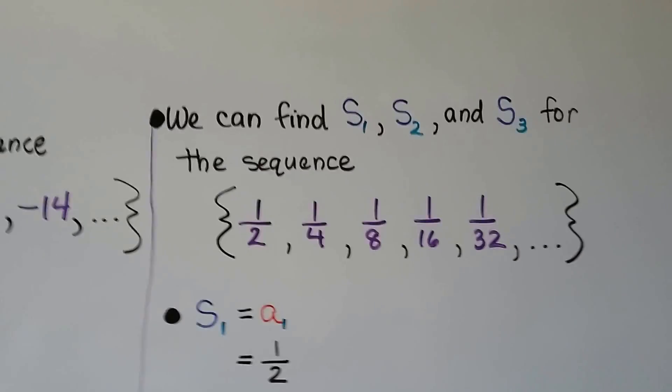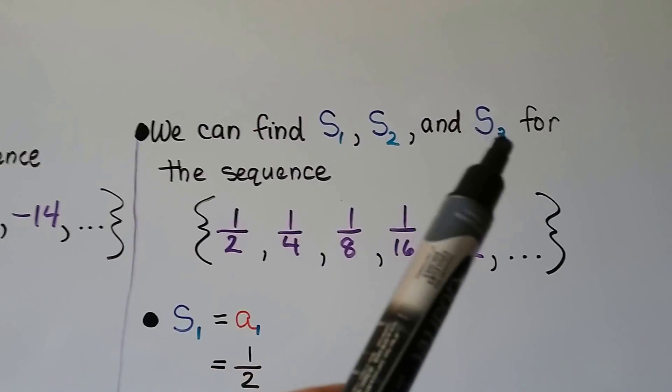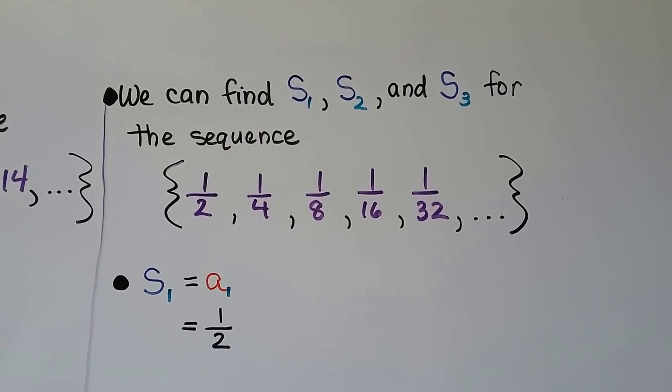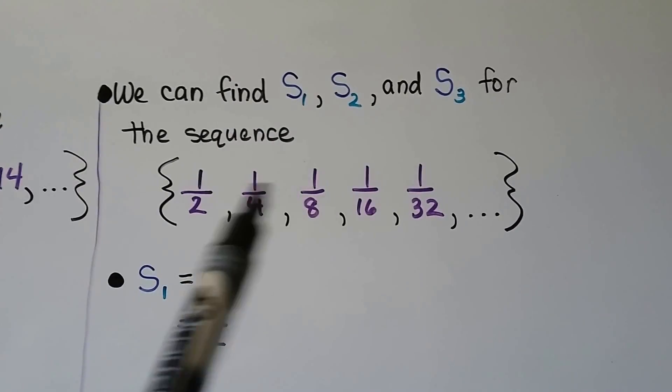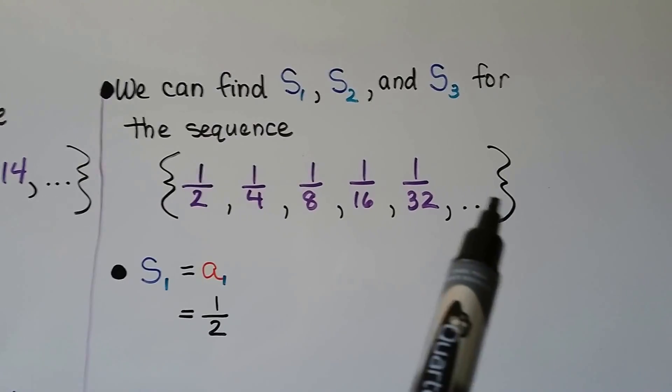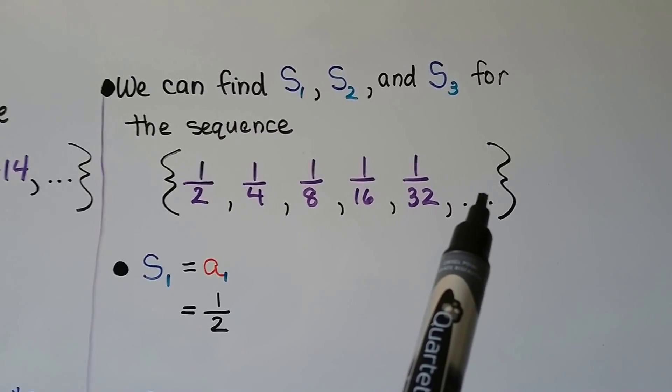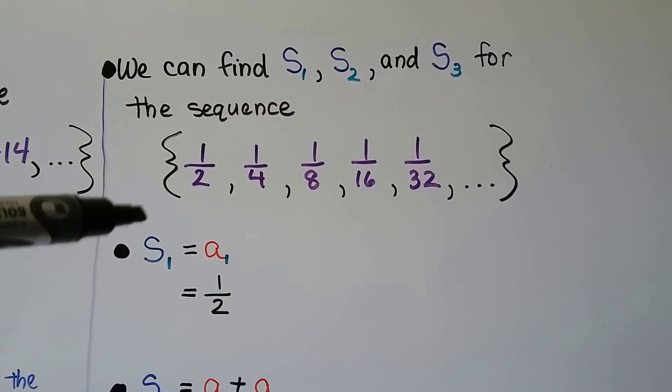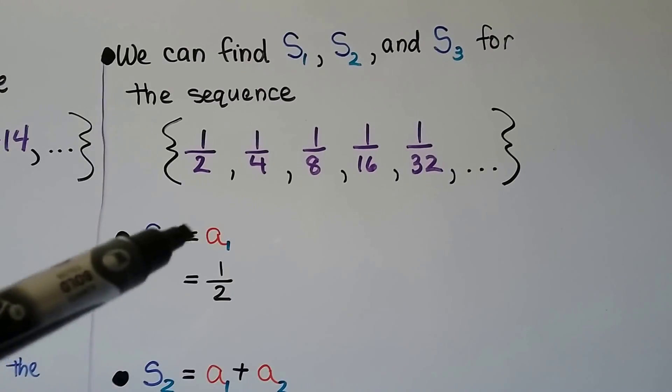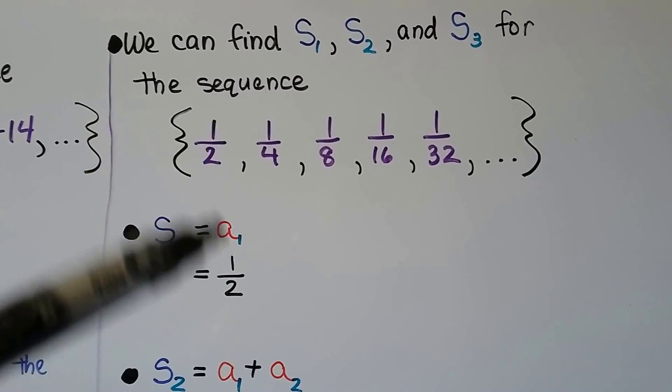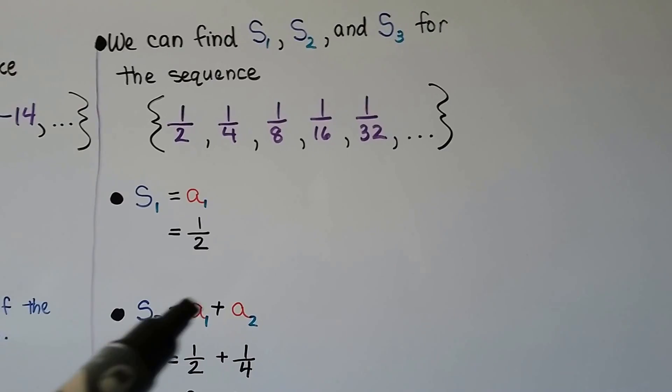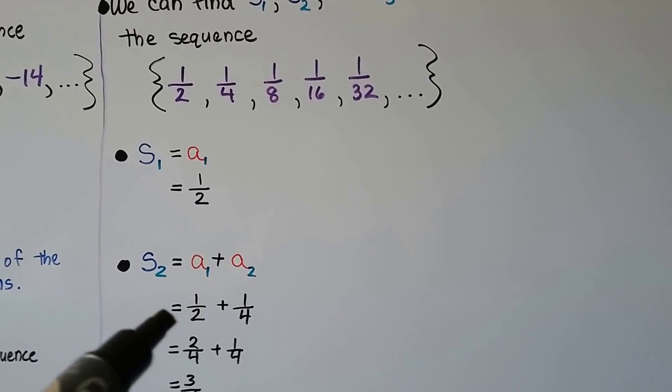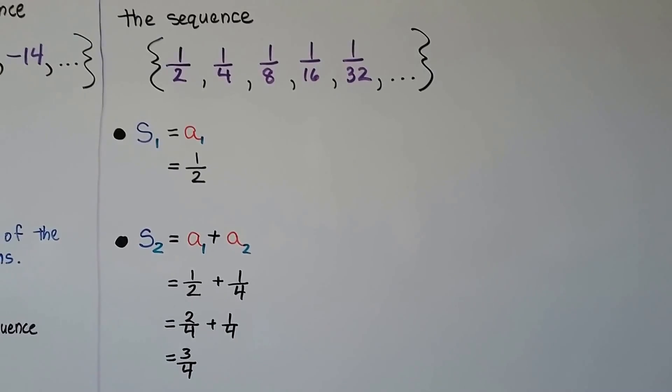We can find S_1, S_2, and S_3 for this sequence. We have fractions: 1/2, 1/4, 1/8, 1/16, 1/32. They're being divided by 2 each time. For S_1, we have a_1 = 1/2. For S_2, we want the sum of the first two. So we have 1/4 and 1/2 added together. With common denominators, we get 2/4 + 1/4 = 3/4.